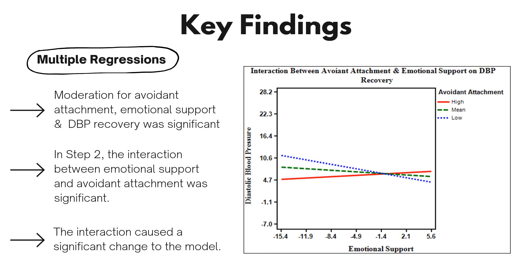The second significant moderation model was for avoidant attachment, emotional support, and diastolic blood pressure recovery. In step two, the interaction between emotional support and avoidant attachment was significant and caused a significant change to the model. For those high on avoidant attachment, as emotional support increases, diastolic blood pressure recovery carryover increases; while for those low on avoidant attachment, as emotional support increases, diastolic blood pressure recovery carryover decreases.